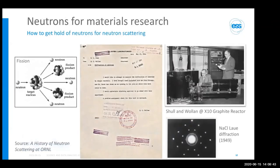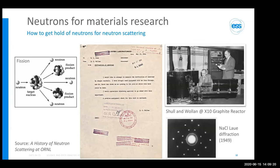How do we get hold of these neutrons? One way is from fission: a neutron hits a target nucleus, splitting it into two smaller nuclei and generating three new neutrons, each of which can trigger further reactions — a chain process. This can be controlled in a nuclear reactor, and it is also possible to extract neutrons from the reactor.